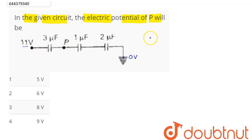We can redraw this circuit as shown: 3 microfarad, next is 1 microfarad, next is 2 microfarad. So 3, 1 and 2, and across this there is a battery whose potential is 11 volt.